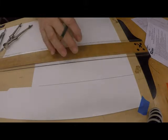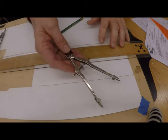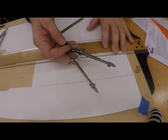Now the second line I draw is not going to be at right angles to the first line. I've set my compass to two and three-quarter inches.